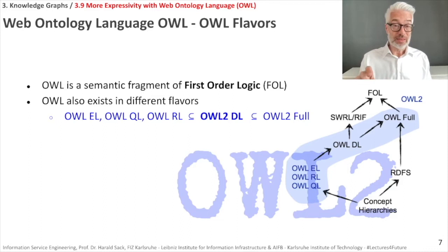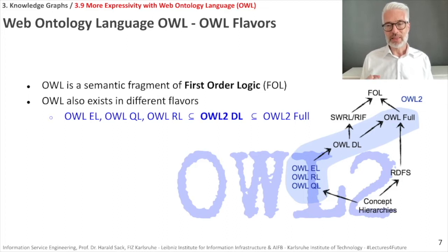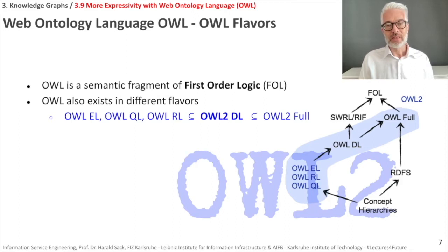However, OWL is a semantic fragment — so it's smaller than first-order logic — while retaining expressivity and staying decidable. OWL exists in different flavors. We are looking at OWL 2 DL, which is based on description logic. This is designed to provide maximum expressiveness while retaining completeness, decidability, and the availability of practical reasoning algorithms. So this is a very good compromise.